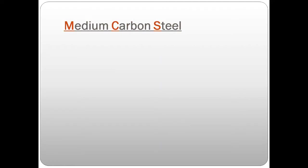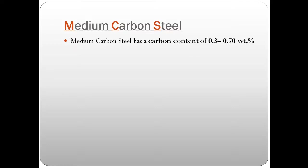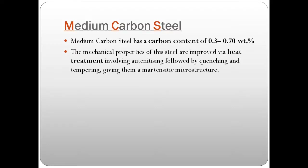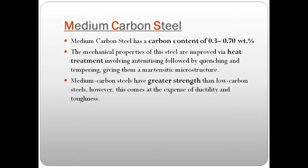Moving on to medium carbon steels — the carbon content in these steels is in a range of 0.3 to 0.7%. Since the carbon percentage has increased, these are steels whose properties can be altered by heat treatment. As we increase the carbon percentage, heat treatment of steels can be done more easily. If you want to increase the mechanical properties of these steels, we go for heat treatment, which gives them a martensitic microstructure.